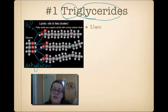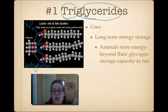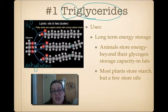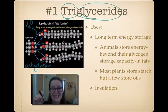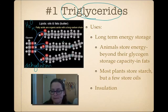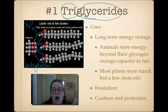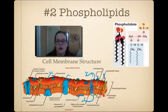Triglycerides are what you think of most often when you think of fats and oils. They're used for long-term energy storage - animals store energy beyond glycogen by converting sugar to fat, which is still carbon, hydrogen, and oxygen. Most plants store starch, but a few store oil, especially in their seeds, to give the baby plants energy to push up through the soil. Triglycerides are also used for insulation, cushion, and protection for joints and bones.